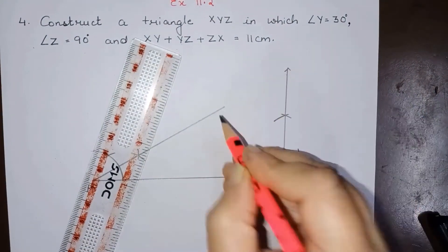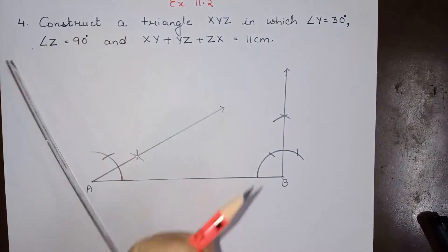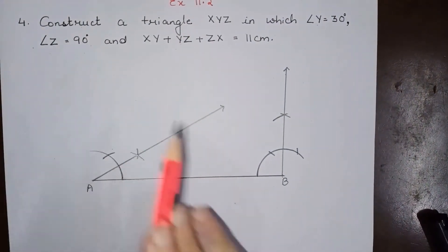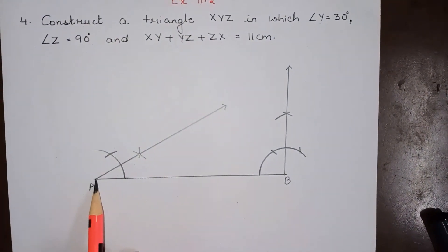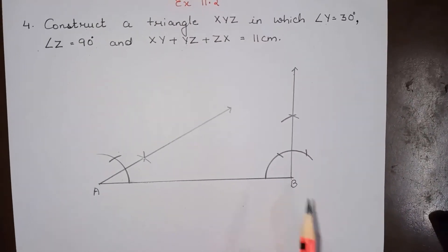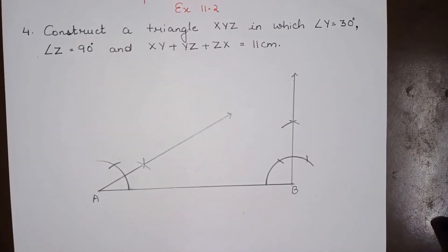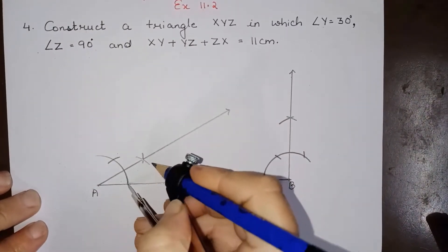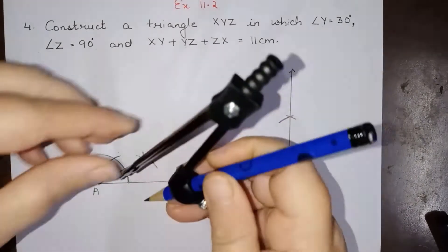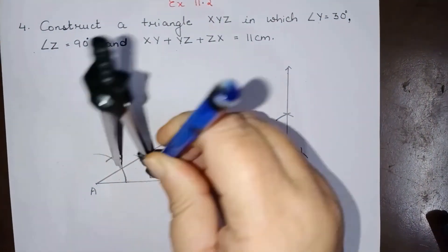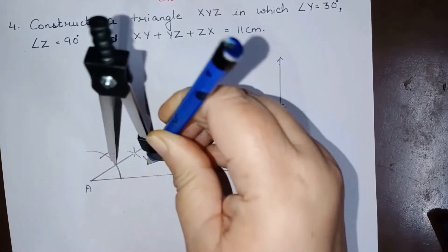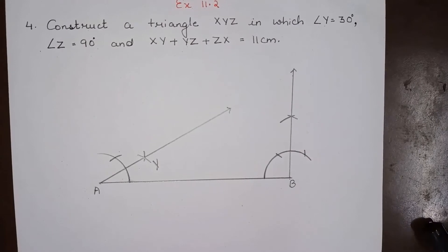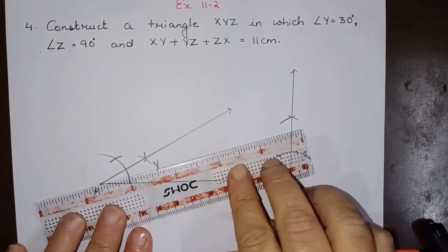Now the next step is to bisect these angles. We have constructed angle Y as 30 degrees at A and angle Z as 90 degrees at B. Now we will bisect these angles. Let us bisect the 30-degree angle at A. We have bisected this angle of 30 degrees to get an angle of 15 degrees.